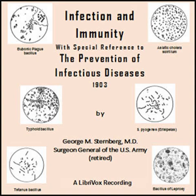End of Part 1, Chapter 4. Part 1, Chapter 5 of Infection and Immunity by George M. Sternberg. This LibriVox recording is in the public domain. Disinfection. The object of disinfection is to prevent the extension of infectious diseases by destroying the specific infectious agent, germ, which gives rise to them. This is accomplished by the use of disinfectants.